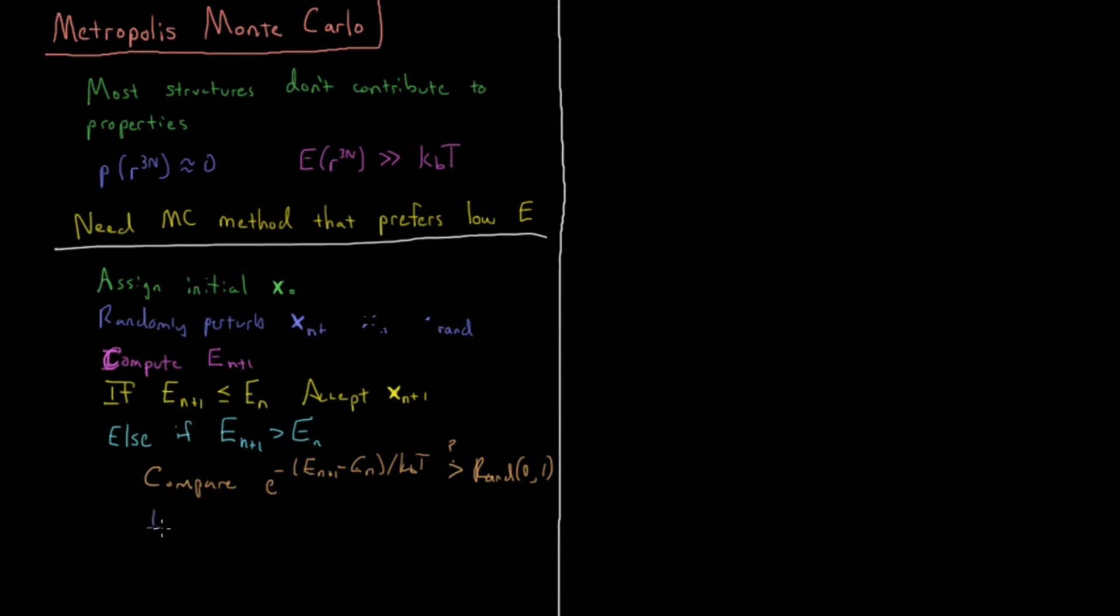We compare it there, and if yes, accept the new structure. If no, keep the original structure xₙ. We only update to the new structure if it passes this test—this is the Metropolis part of the algorithm. Monte Carlo is random perturbation of the structure; Metropolis is the acceptance test. If it passes the test we keep it, if not we reject it and keep the old one.